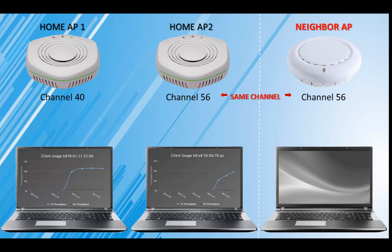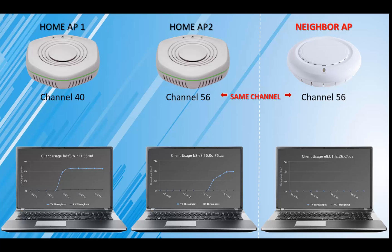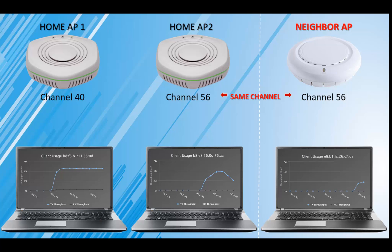Then, a neighbor who is not in your network introduces a new access point which is configured to use the same channel as one of your subscribers' APs. Co-channel interference from the neighbor immediately degrades performance on the AP sharing the same channel.